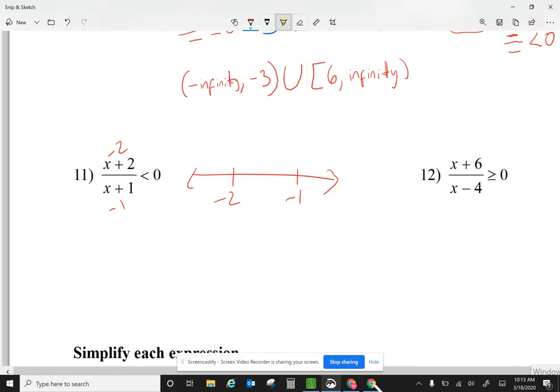Let me check the first section. Any number less than negative 2. That number plus 2, I get a negative. That number plus 1, I still get a negative. Is negative divided by negative less than 0? Nope.